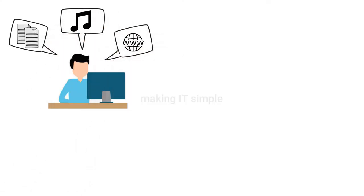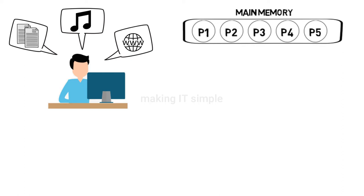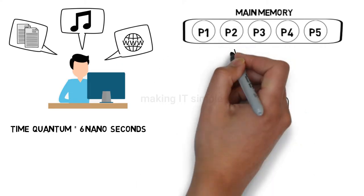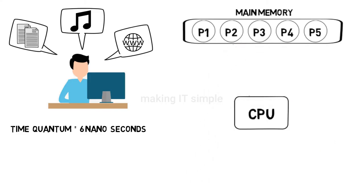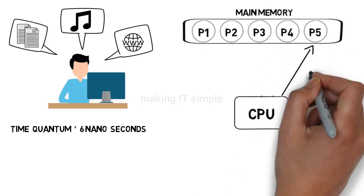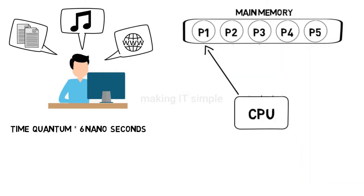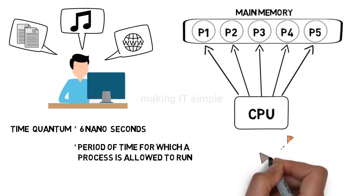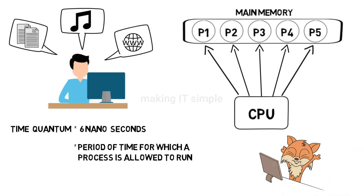Let's simplify the definition. When you are using multiple programs, all these programs or processes are loaded into the main memory. Now processes are assigned a specific quantum of time. Let's say the time quantum is 6 nanoseconds. So the CPU will execute the first process for 6 nanoseconds, then move to the next process which will also be executed for 6 nanoseconds, then the third one, and so on. After the last one, again the first will be executed for 6 nanoseconds. Time quantum is the period of time for which a process is allowed to run. The multitasking operating system does the switching so fast that it feels like all processes are running in parallel, and because it is so fast, we users are able to work on multiple programs conveniently.